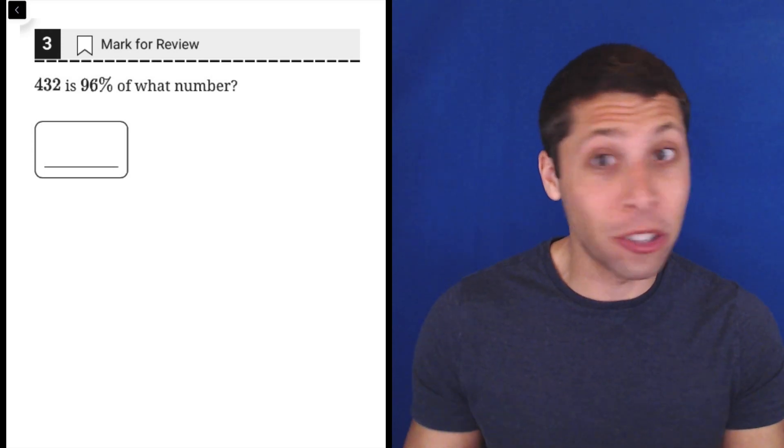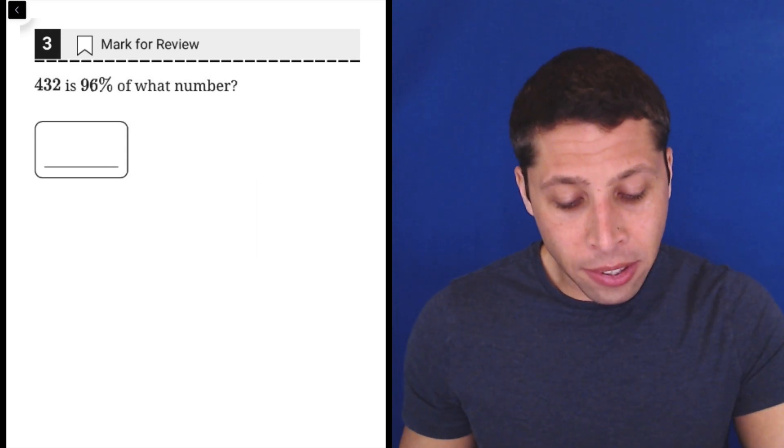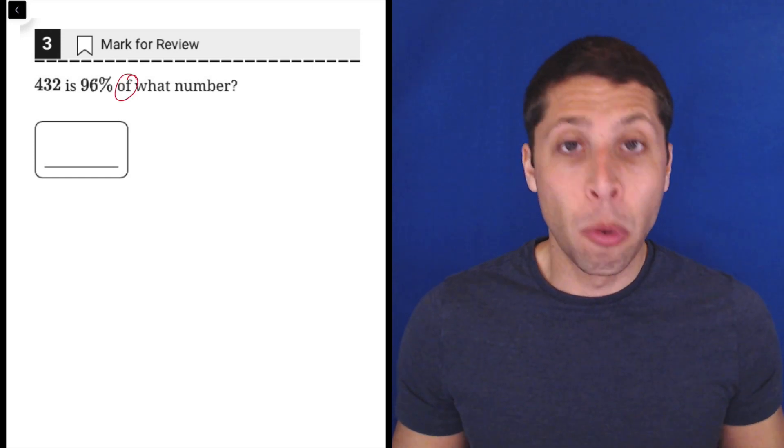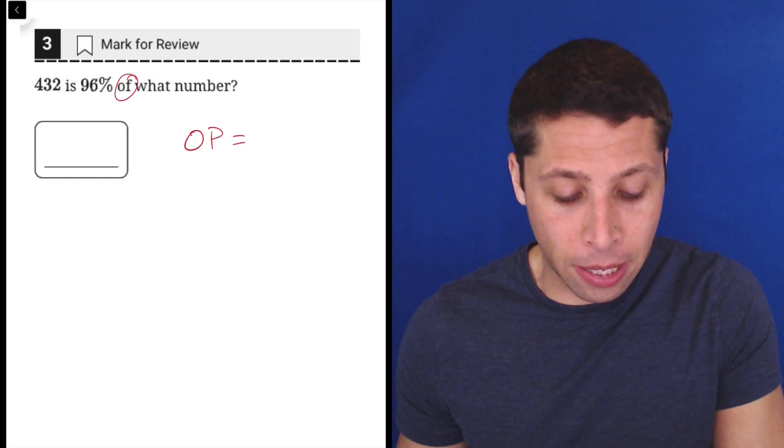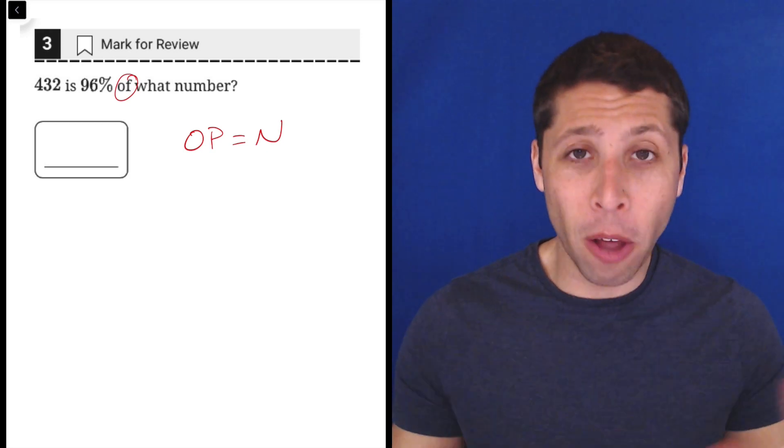And the SAT, whether it has answer choices or not, is trying to get us to make the mistake. So this is a pretty simple percentages situation. We have an of percentage, which means we're going to use the open formula. And this is the version that's most simple. It just looks like the word open. That's why it's called the open formula.